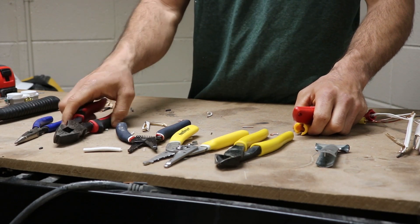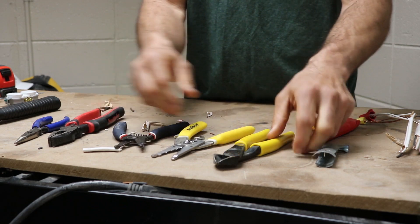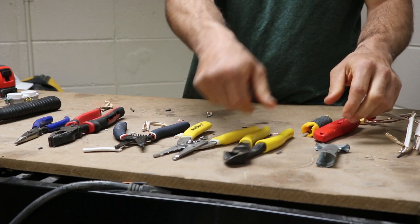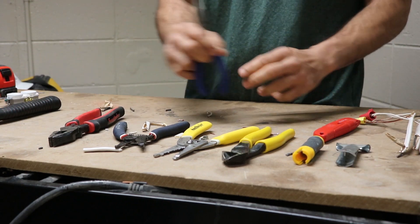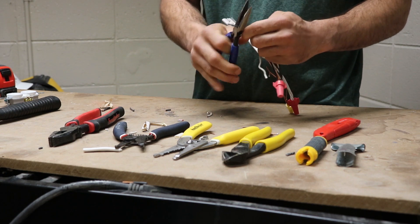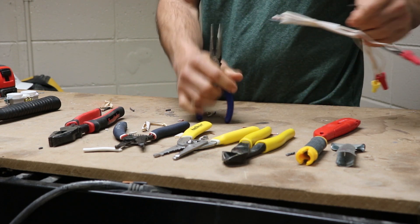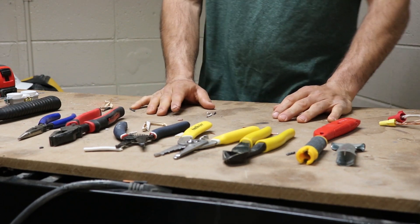We got the lineman's pliers, strippers, diagonal cutters or dikes, and then you have the cable rippers. Another tool is needle-nose pliers. They're good for, you know, you can bend hooks, you can cut wire. So those are your basic electrical tools.